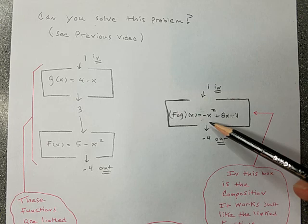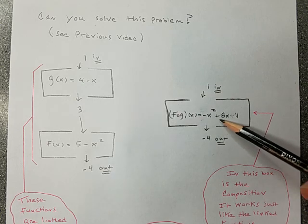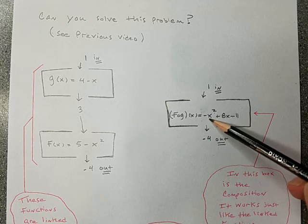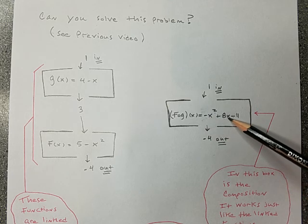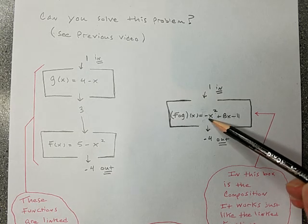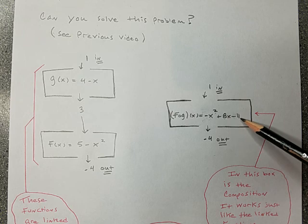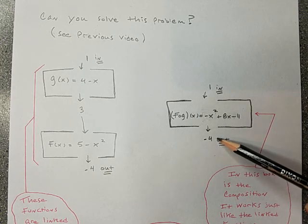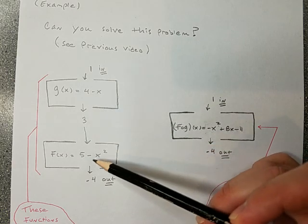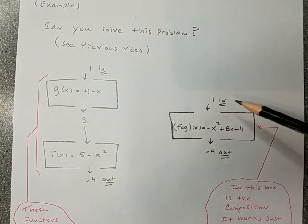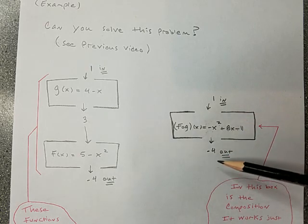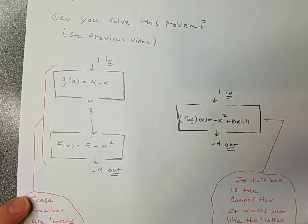Let's try it out. So if you put one in there, how does this work? One squared, okay, take the opposite of that. That's negative one plus eight times one. So here I have eight minus one. That's seven. And what's seven minus 11? That's negative four. So it works. You put one in, you go through these linked together, you get negative four back out. Here's the composition. You put one and you get the same final result, negative four back out. That's what a composition is.